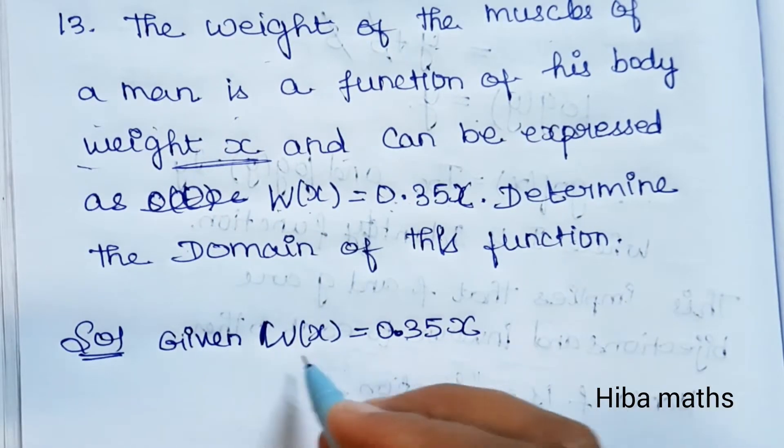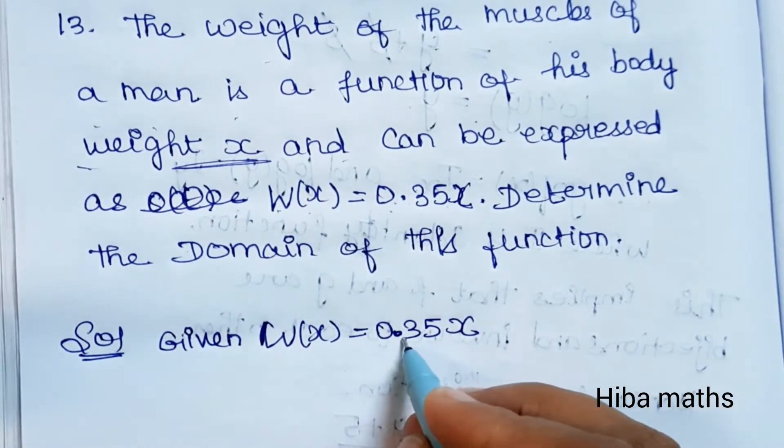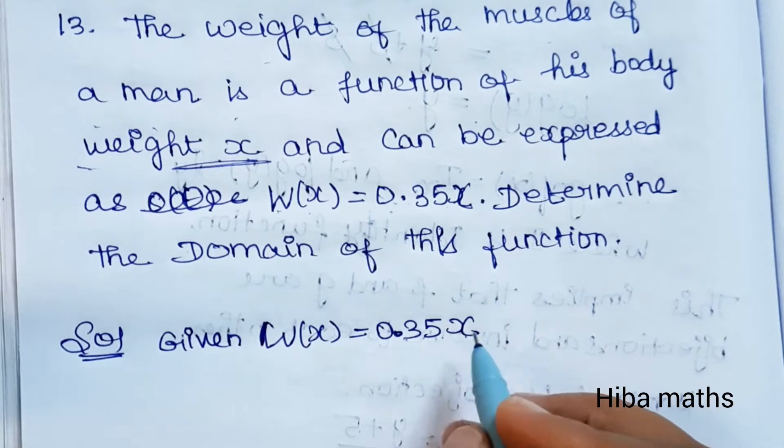Given the function w(x) = 0.35x, let's examine different x values. If x = 0, then w(0) = 0.